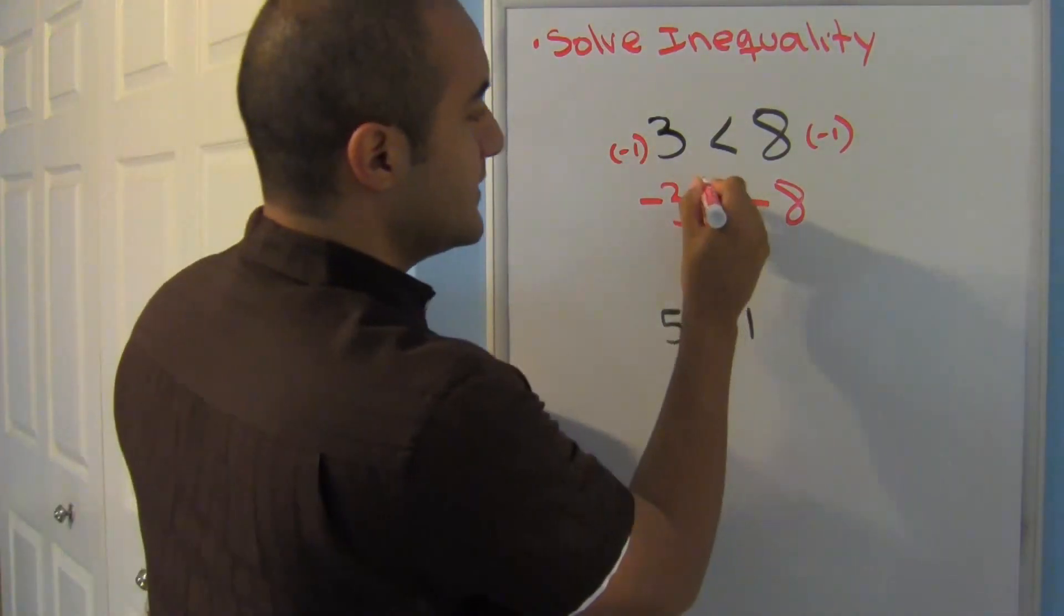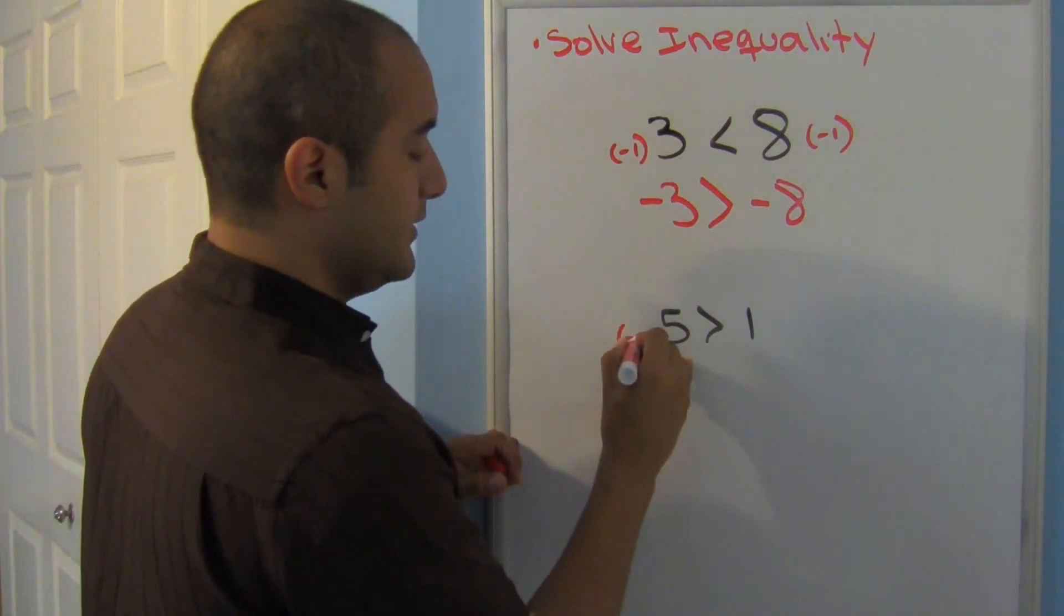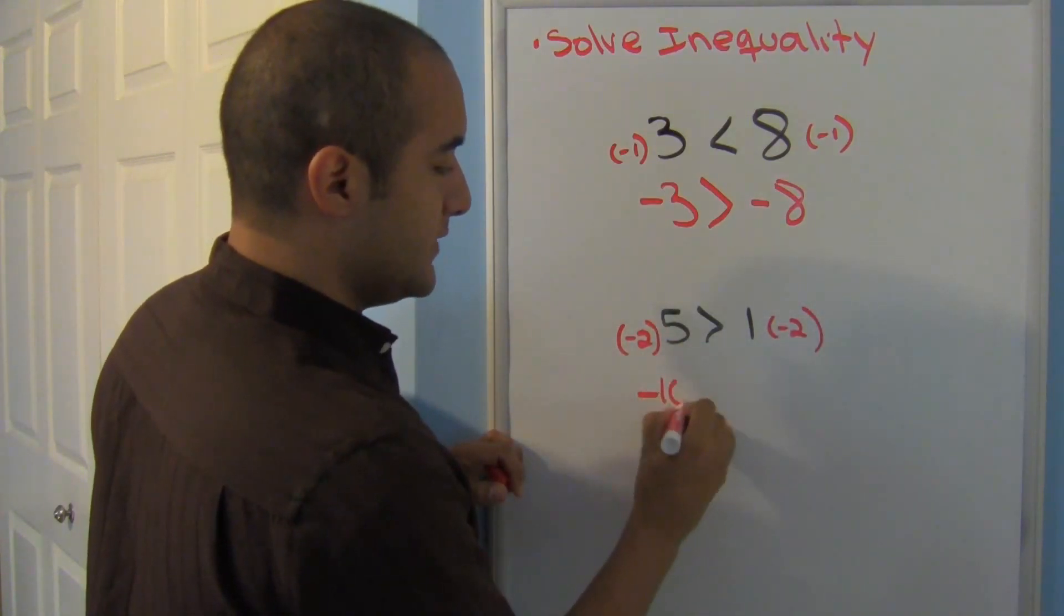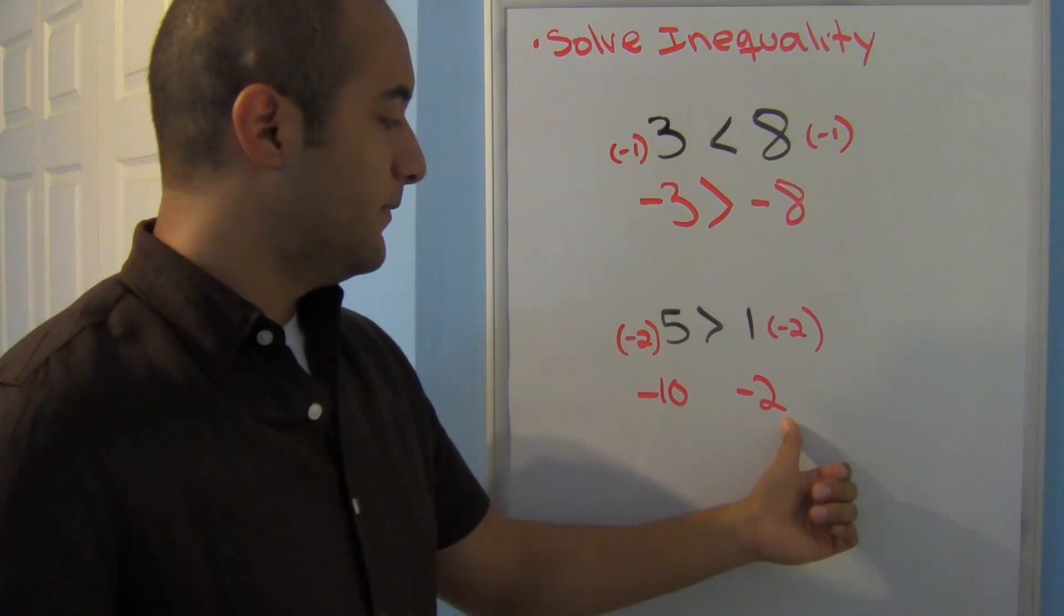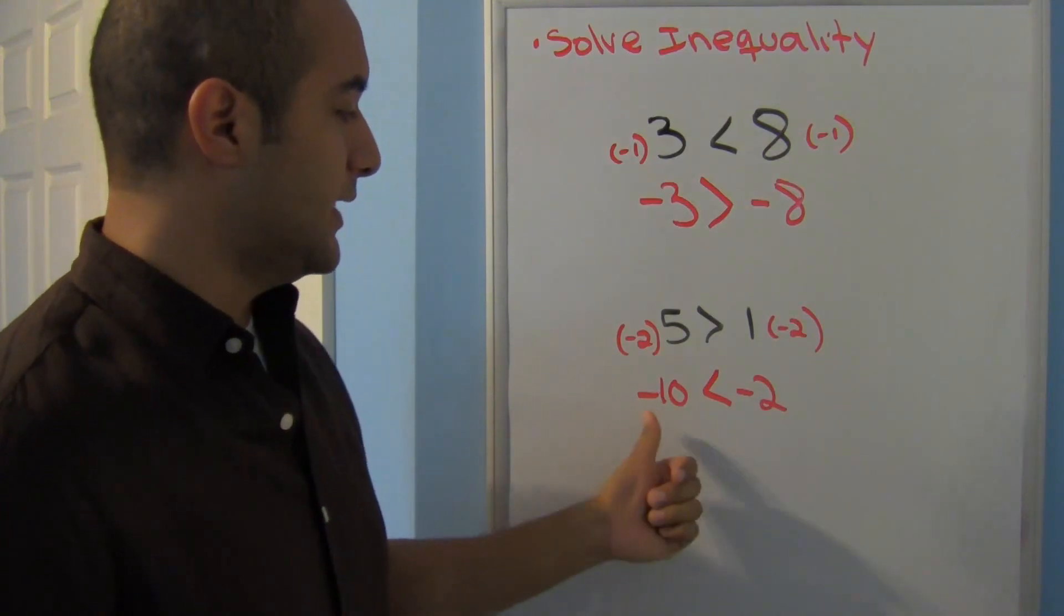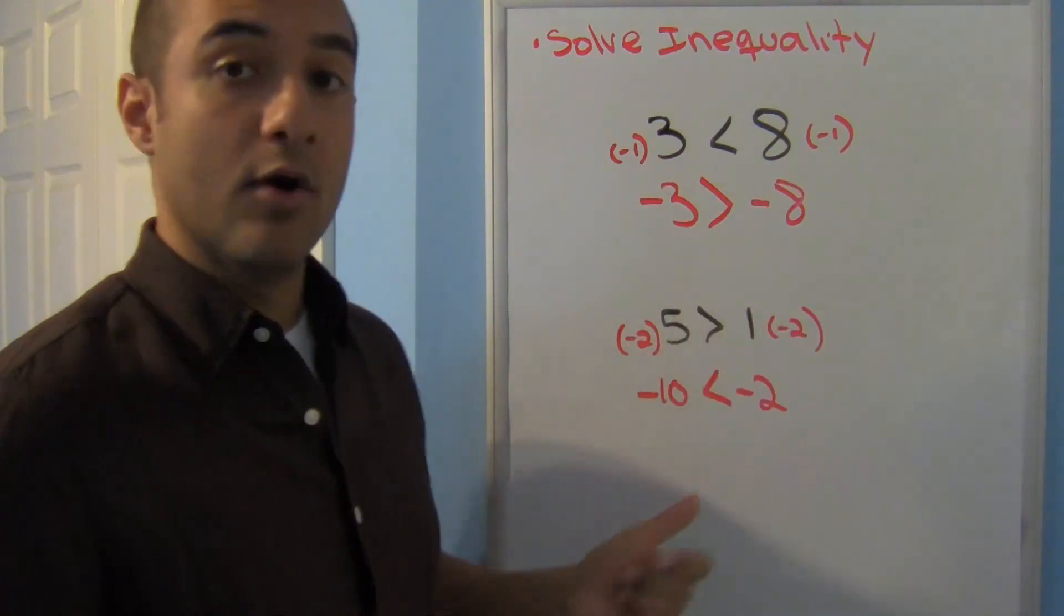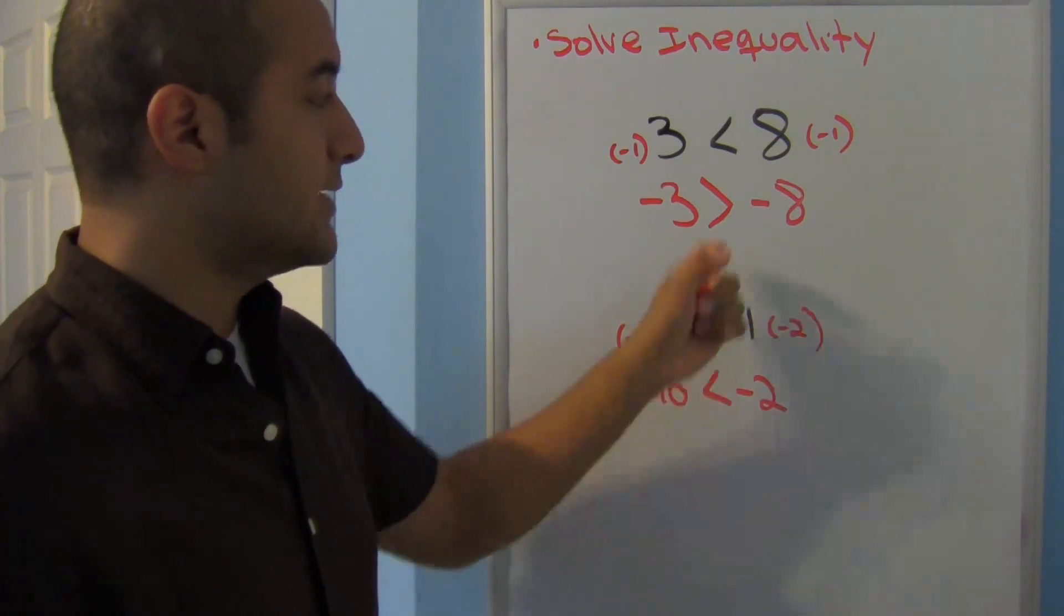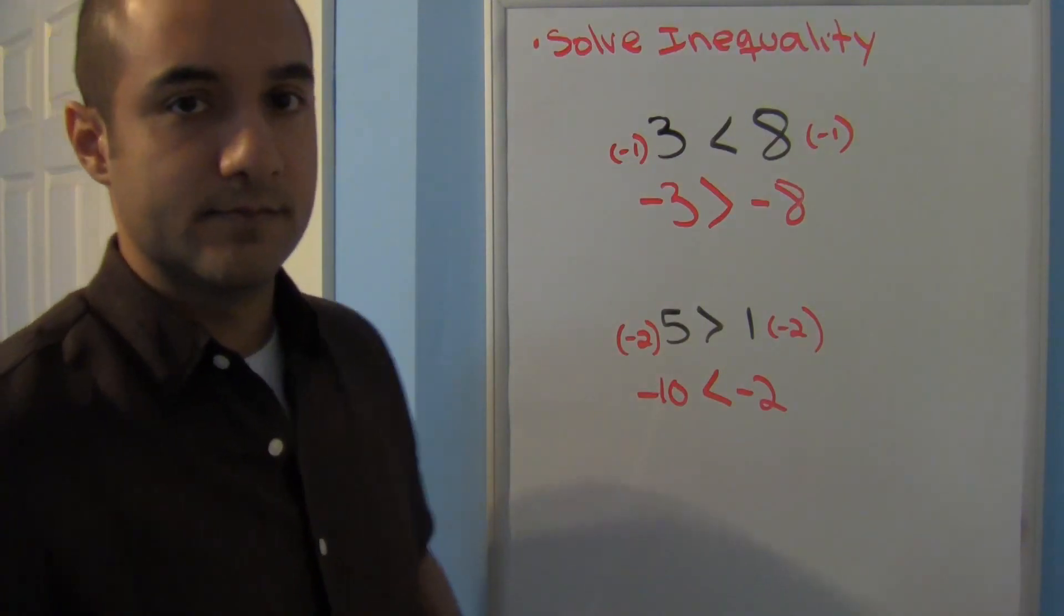Same thing here. If I multiply this by negative 2, it says negative 10 and negative 2. We know that negative 2 is greater than negative 8. So this should say negative 10 is less than negative 2. So notice that whenever I multiply or divide by a negative number on both sides, my sign must be flipped to keep my inequality true.